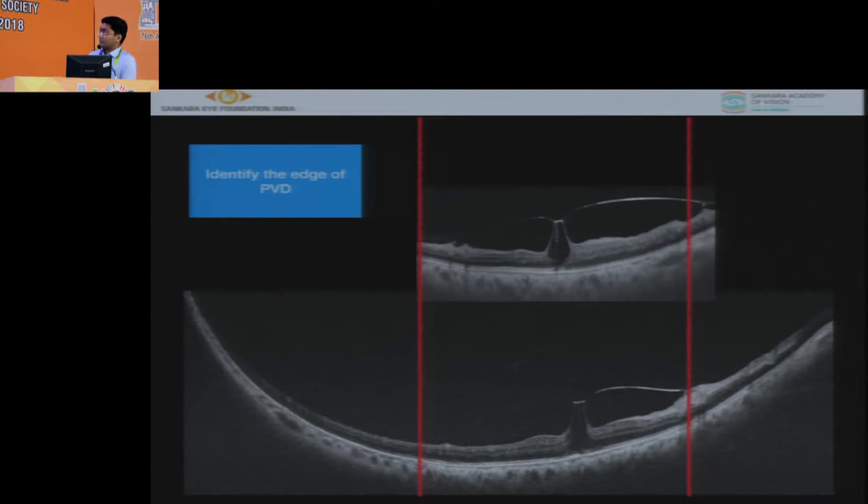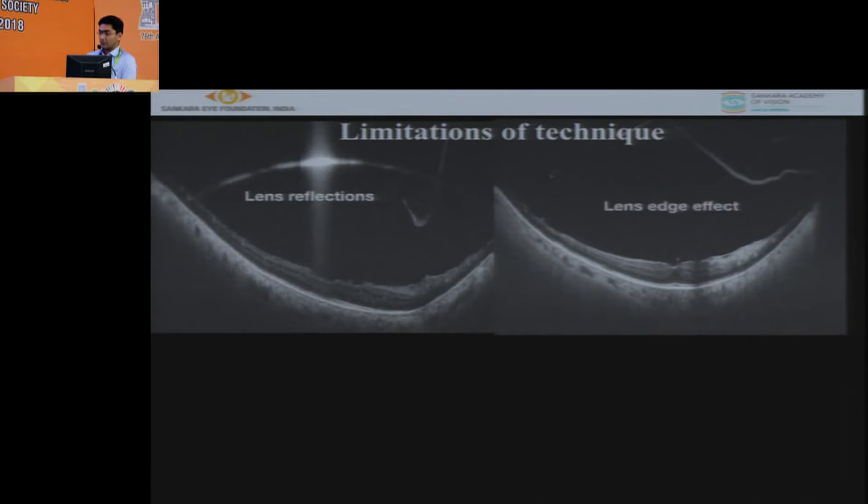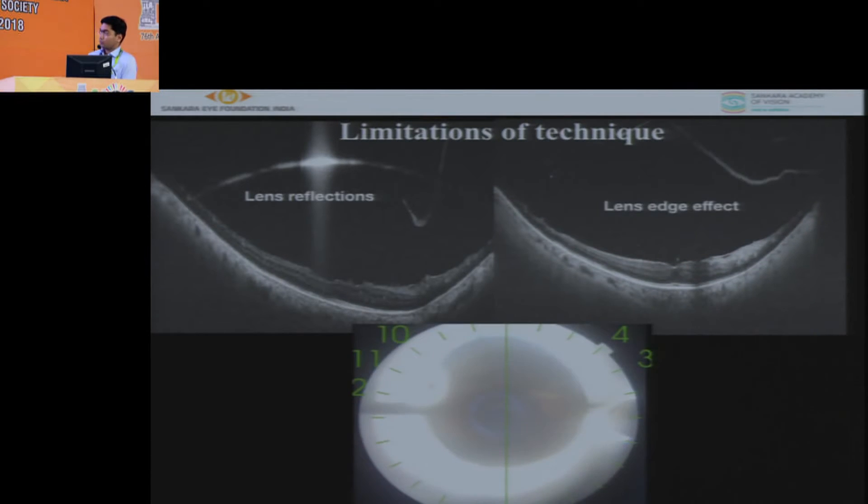And yes as you can see beautiful pictures of this VMD which right now we are seeing just this area with 12x12 and with using the 20-diopter lens it's so wide and beautiful colors with beautiful image quality. But yes it comes with some limitations - one is a lens reflection, another one is the lens edge effect and most importantly we have to go away with the poor fundus photograph.